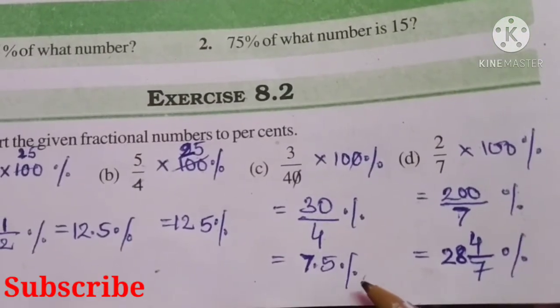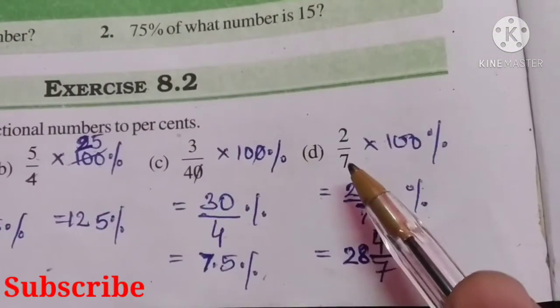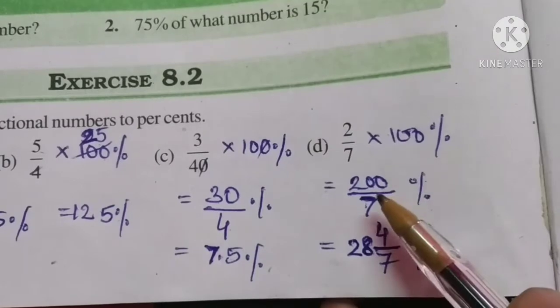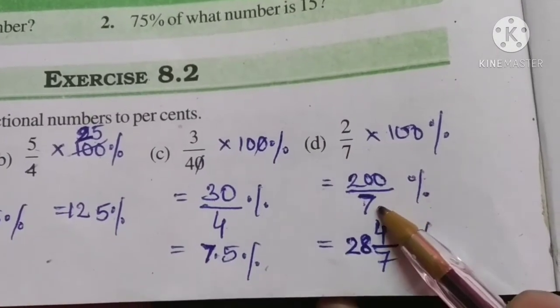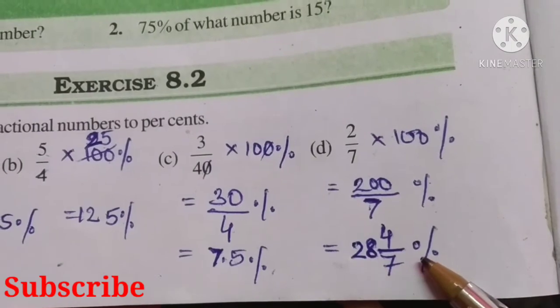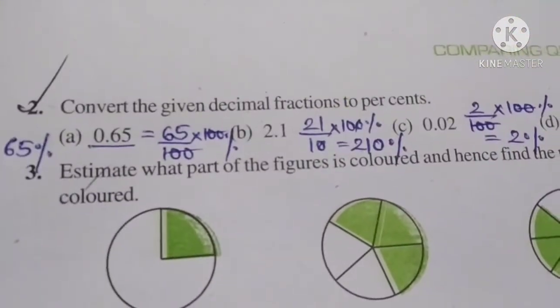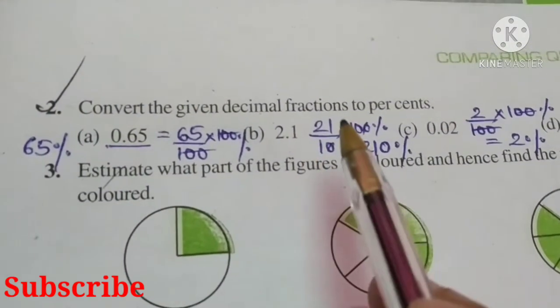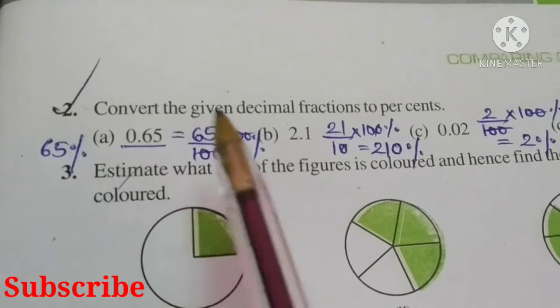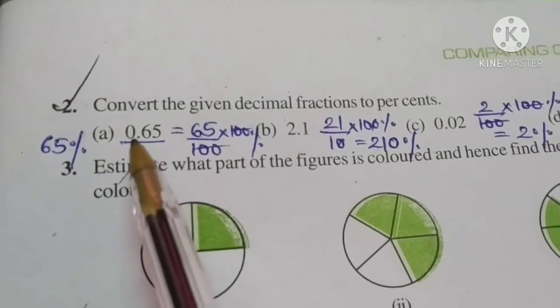Part (d): 2/7 times 100 percent, we will get 200/7, that is 28 and 4/7 percent. Now second question: convert the given decimal fractions to percent.